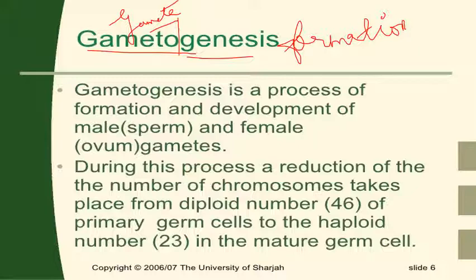In this process, there is a continuous reduction of the number of chromosomes from diploid to haploid, and that haploid number leads to the formation of mature germ cells. That mature germ cell is responsible for undergoing fertilization.